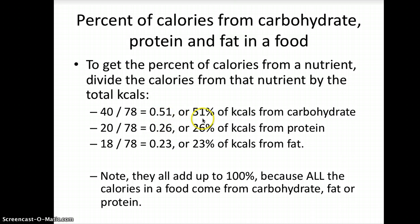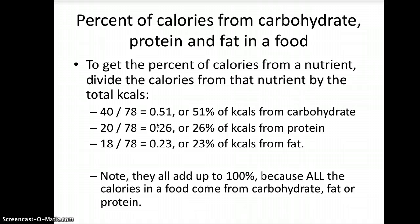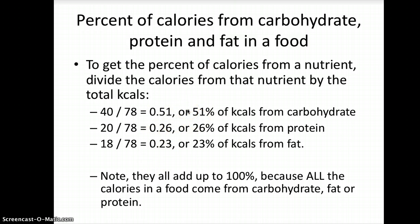In your head, you could say that equals 51%. Same for the protein — you would take the calories from protein and compare it to the total number of calories. So 20 out of 78 equals about 0.26, or 26%. So 20 divided by 78. And lastly, for the fat, same thing: 18 calories came from fat out of the total, so 18 divided by 78 is about 23% of the calories from fat.